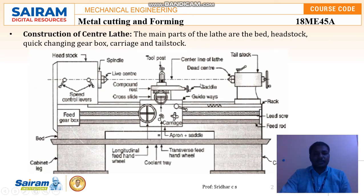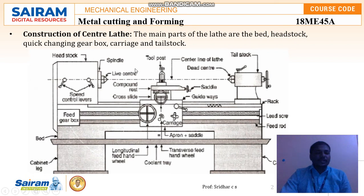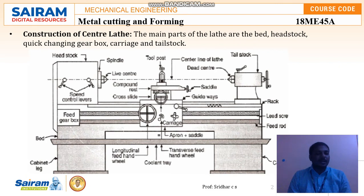Other parts include the saddle, guideways, compound rest, live center, spindle, tool post, and dead center — measured from the center line of the lathe. Using the saddle we can move towards the center of the lathe. The bed functions to resist forces and absorb vibrations for smooth functioning of the lathe machine. The cabinet legs support the lathe above them, along with the transverse feed hand wheel and longitudinal feed hand wheel.